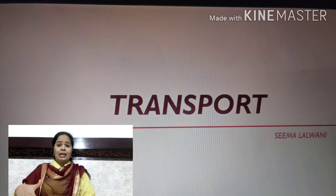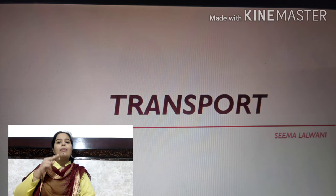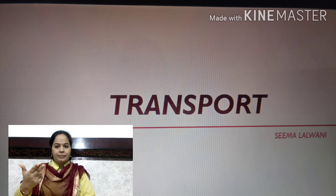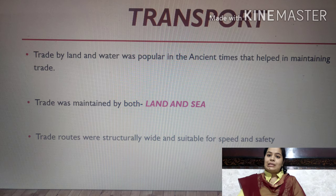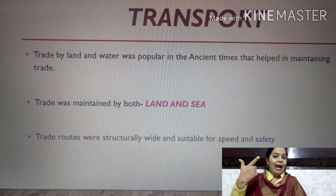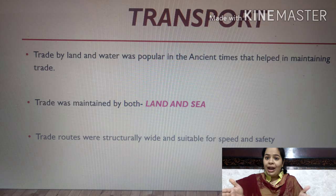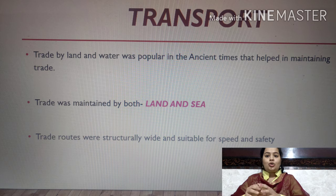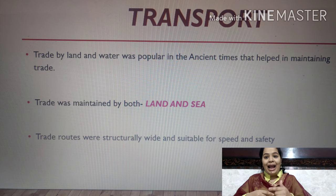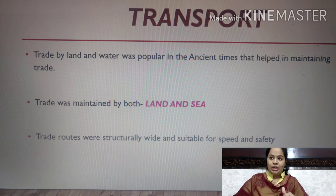In ancient times, transport played a very important role in maintaining trade. As you can see in the slide, trade was maintained by two means: land and water. Land means roads, and water transport was very wide and suitable for speed and safety. Overall, trade by land and water was popular in ancient times.